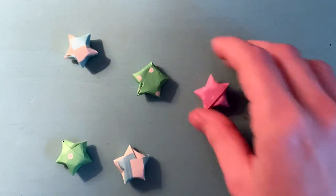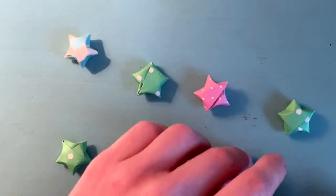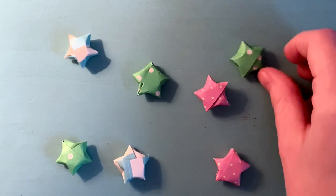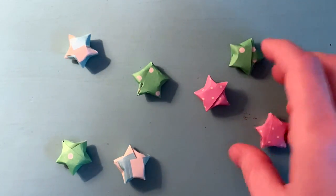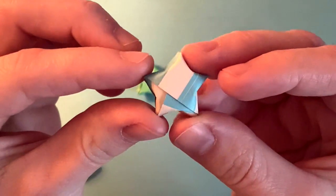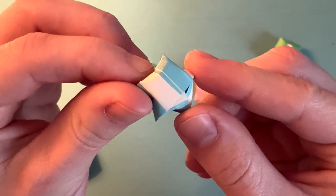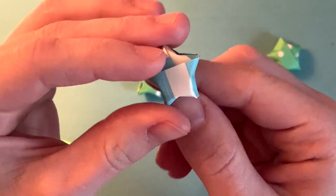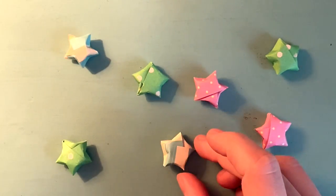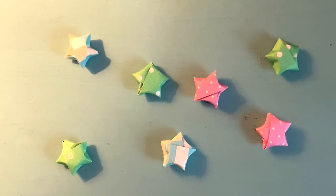These adorable little stars are just so cute and once you learn how to make them, it's hard to stop. I'm pretty addicted myself. You can put them in a glass jar or string them and make a little banner out of them. They're just so cute and they're not too hard to make. So let's get started.